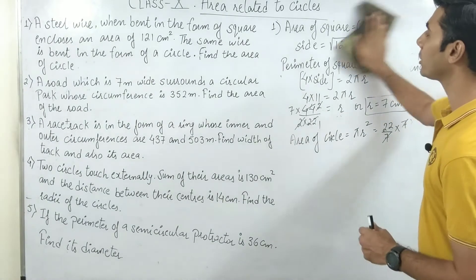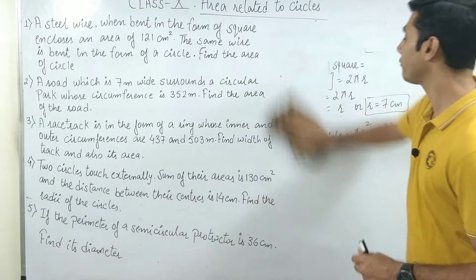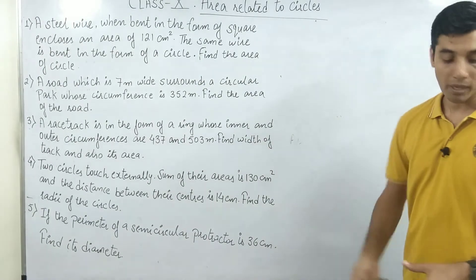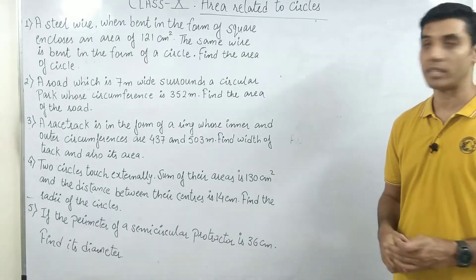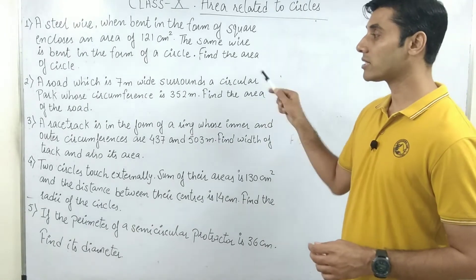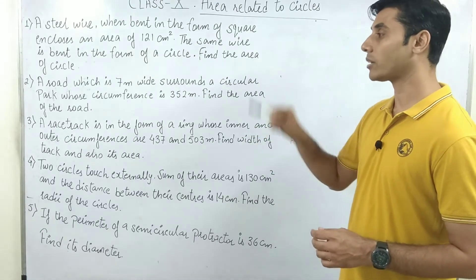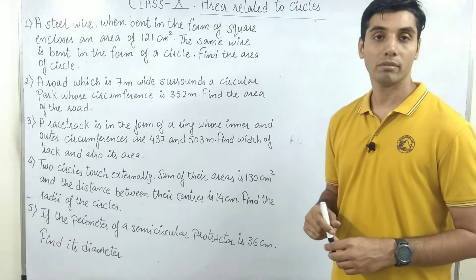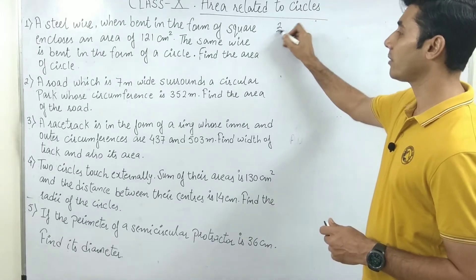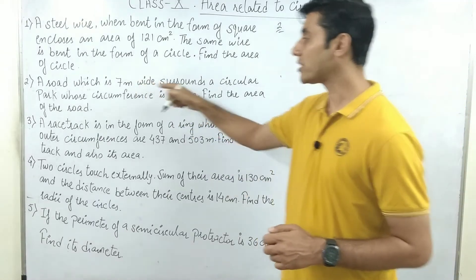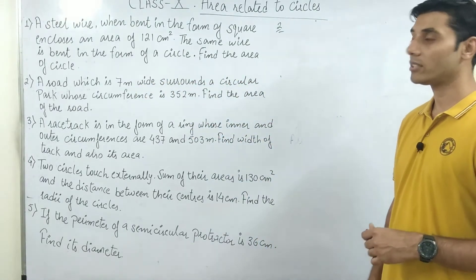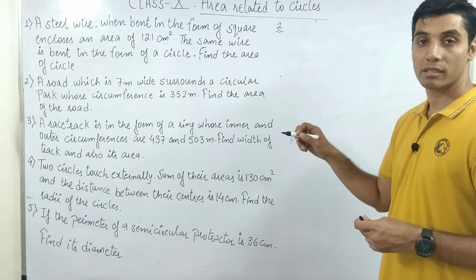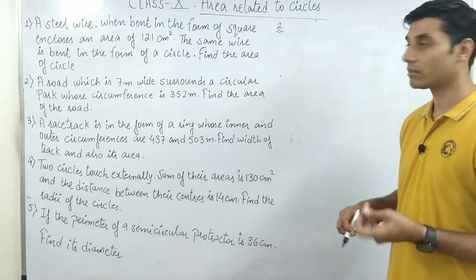Question number 2: a road which is 7 meters wide surrounds a circular park whose circumference is 352 meters. Find the area of the road. There is a circular park and the road surrounds it. The road is 7 meters wide — that part should be 7 meters.